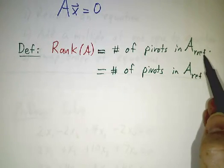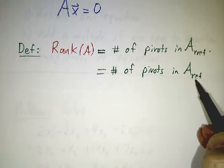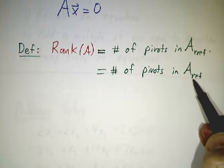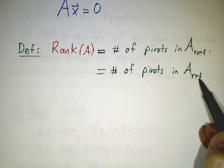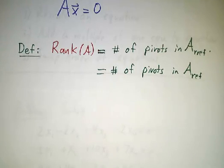The definition is reduced row echelon form, but once you've gotten it to row echelon form, you're not going to create or destroy any pivots. So getting it to row echelon form is enough to figure out the rank.